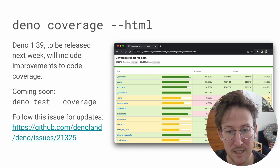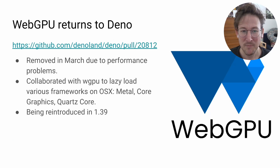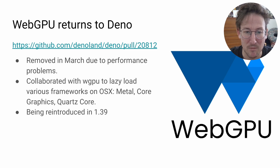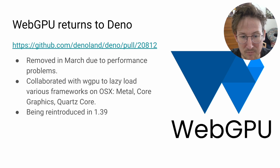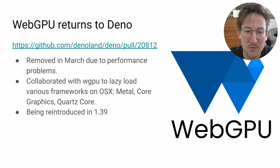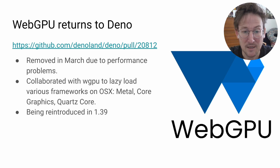We want coverage to be world-class like everything in Deno. WebGPU is returning to Deno also in 1.39. We've had WebGPU support for a long time — probably for two years now — but we removed it back in March due to startup time performance problems. We realized that WebGPU support was loading all sorts of system libraries, which had a detrimental impact on users who had nothing to do with WebGPU. So we worked with the WGPU team to lazy load various frameworks like Metal and QuartzCore, and that work is complete and will be landing momentarily.